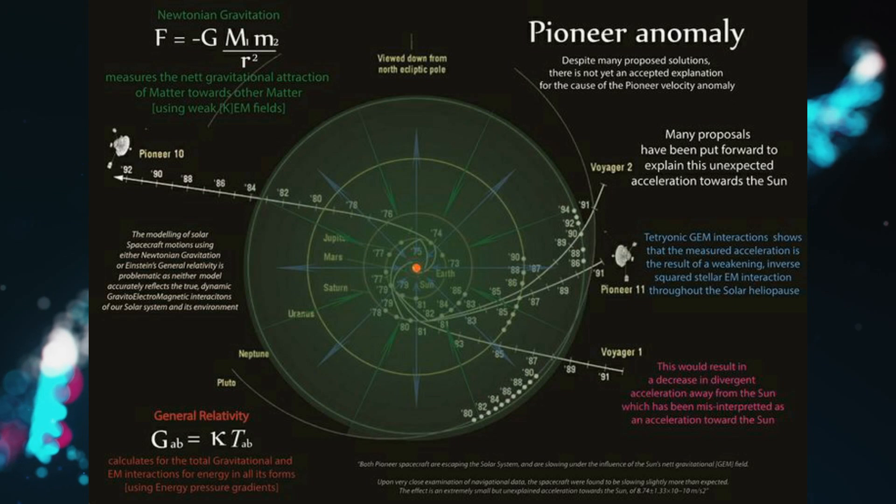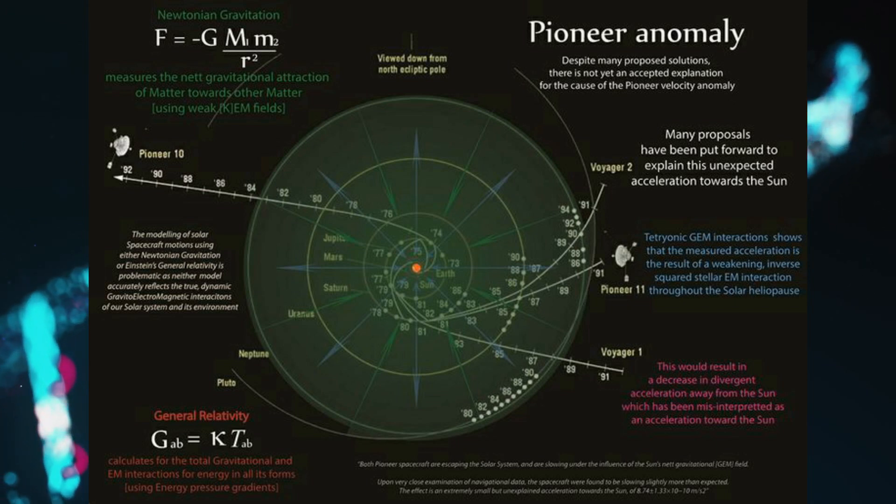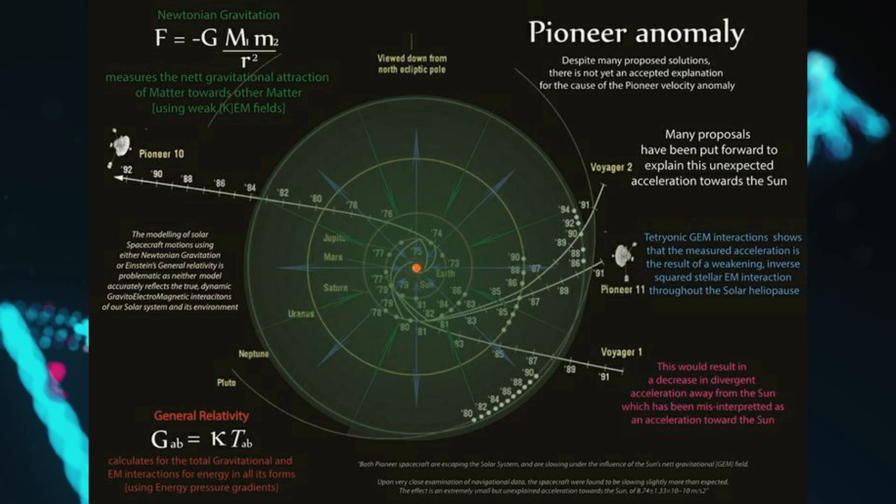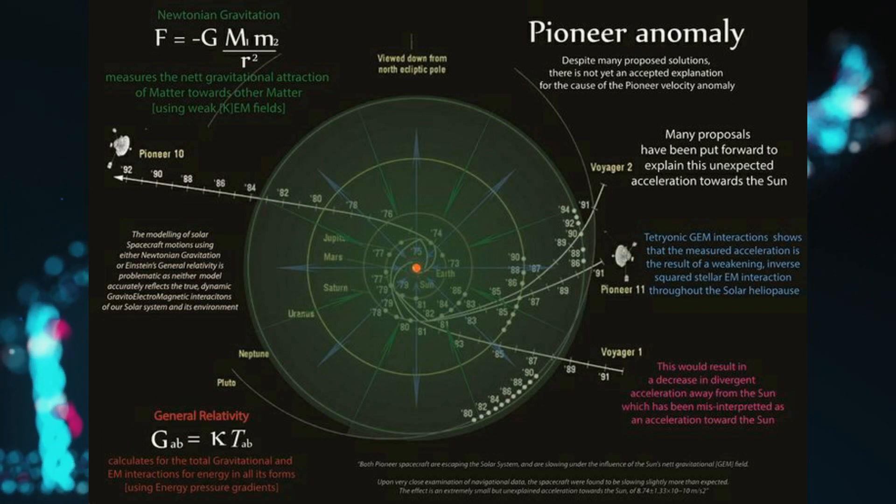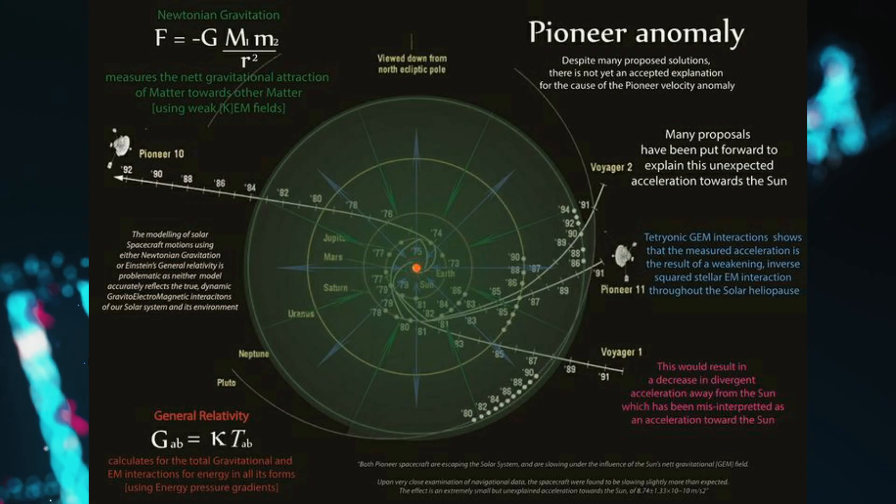If the positions of the spacecraft were predicted one year in advance based on measured velocity and known forces, mostly gravity, they were actually found to be some 400 kilometers closer to the sun at the end of the year. This anomaly is now believed to be accounted for by thermal recoil forces.